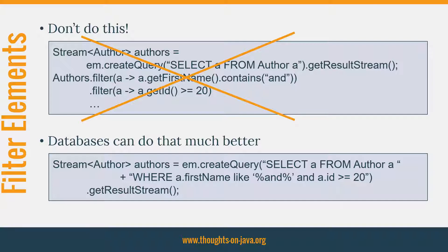You should better use JPQL or the Criteria API to specify the filter criteria in your query. And if that's not possible, you can still use a native SQL query. I explained the capabilities of JPQL in great detail in a blog post, so I will add the link to it to the video description and give you just a short overview of what you can do in a WHERE clause. You can use several compare operators, access the attributes of all entities referenced in the FROM clause or implicitly joined via the PATH operator, and you can even call database functions to trigger more complex operations.